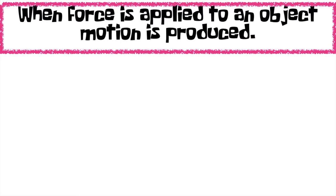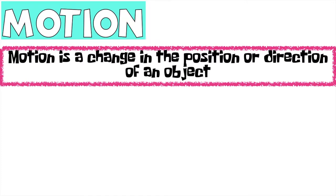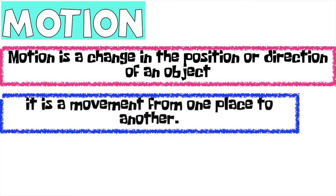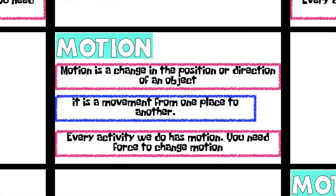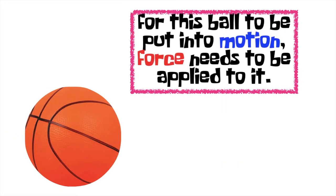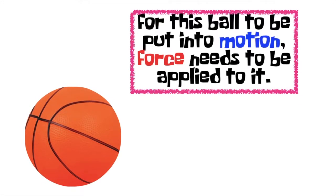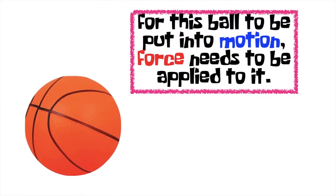When force is applied to an object, motion is produced. When we say motion, it is a change in the position or direction of an object. It is a movement from one place to another. Every activity we do has motion, and you need force to change motion. For this ball to be put in motion, force needs to be applied to it, just like this.